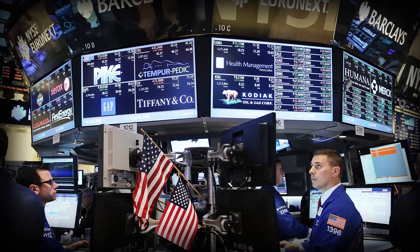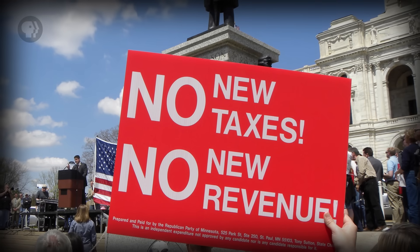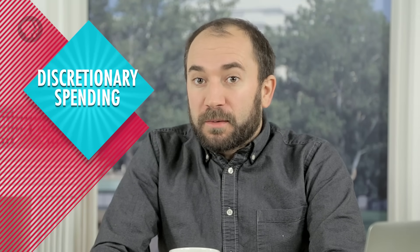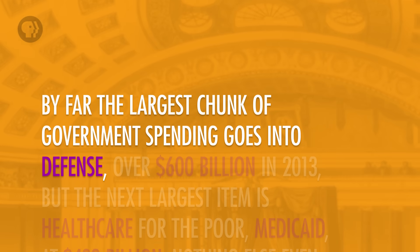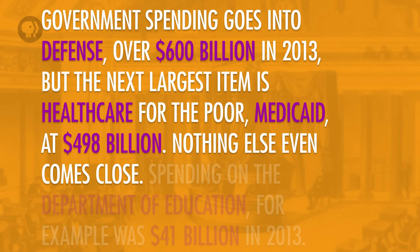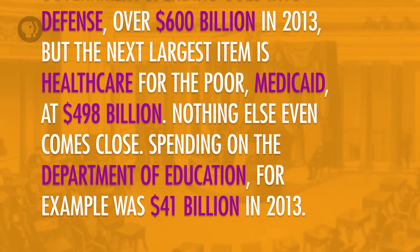The American economy is really huge and really complicated, and it has some issues that need addressing. There's only a limited range of programs on which the government can choose to spend or not spend — these are called discretionary spending. By far, the largest chunk of discretionary government spending goes into defense, over $600 billion in 2013. The next largest item is healthcare for the poor, Medicaid, at $498 billion. Nothing else even comes close — spending on the Department of Education, for example, was just $41 billion in 2013. The government could also balance its budget by raising taxes, but the political consequences can be tough. The combination of Americans' aversion to raising taxes and the government's limited ability to cut spending means that monetary policy becomes its major lever in broad-based macroeconomic policy. That's why we paid so much attention to the Federal Reserve System. Thanks for watching, see you next time.